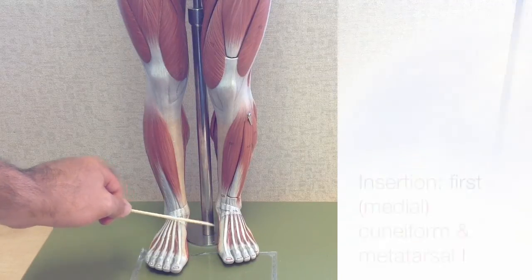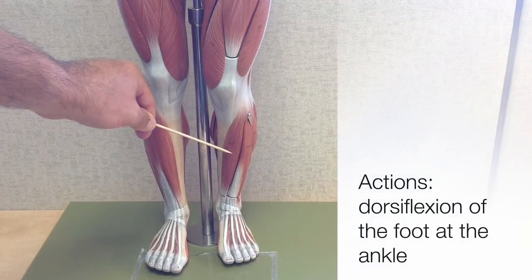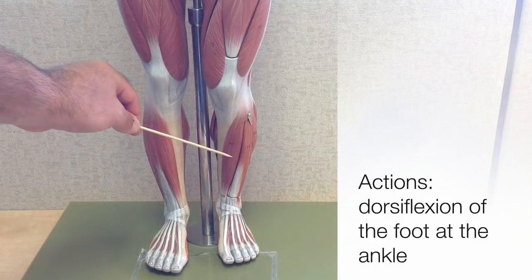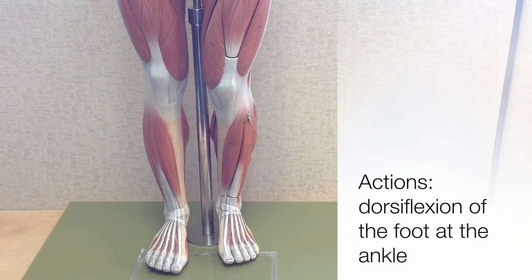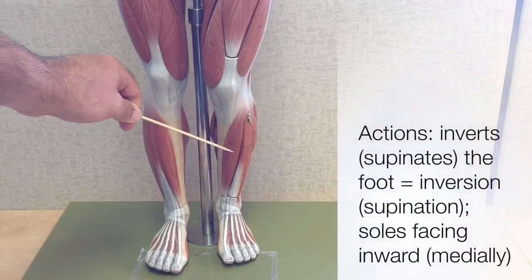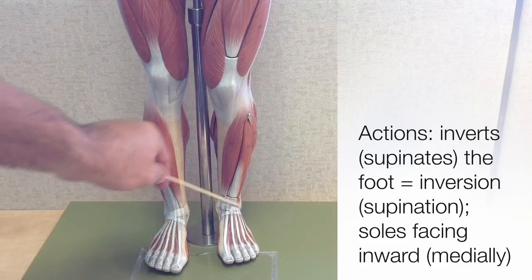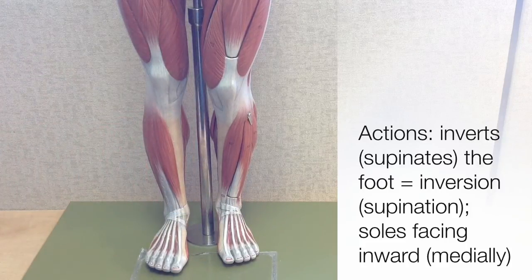Which is digit 1. There are two major actions of the tibialis anterior. The first is dorsiflexion of the foot at the ankle — the movement you make when you stand on your heels and lift your toes up off the ground. It also inverts or supinates the foot, where you tilt your ankles out more laterally, kind of lifting up the soles of your feet so they're directed more medially.